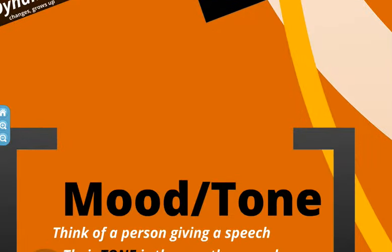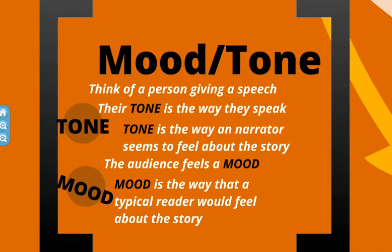And then we're going to talk about mood and tone. These are the two that are the easiest to confuse with each other. Think of a person giving a speech — the tone that they use in their voice will show how they feel about something. The mood is going to be the atmosphere in the room. If the tone is very angry, then sometimes the mood can be fearful because they're afraid of whoever is talking. So tone is the way that a narrator seems to feel about the story, and the mood is the way that a typical reader would feel about the story. They're both about feelings, that's why they're so closely related. But the mood is all about the reader, and the tone is all about the narrator.